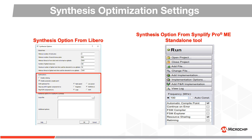Next we have optimization settings. Enable retiming and compile points are conveniently added here because they are often modified based on designers' needs. The automatic compile point option reduces synthesis run time through multi-threading and incremental flow. This option is enabled by default for the high density PolarFire family of devices to reduce synthesis times in these larger devices.